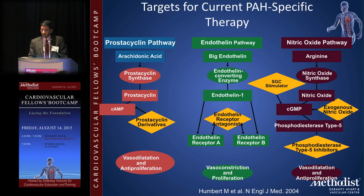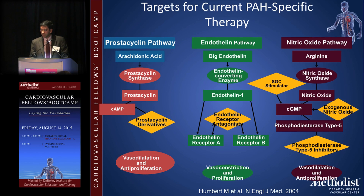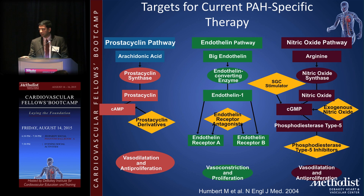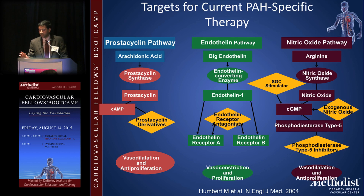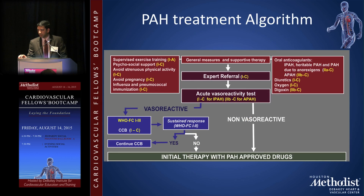The second pathway is the endothelin pathway; the three approved drugs are bosentan, macitentan, and ambrisentan, which block endothelin receptors A and/or B, reducing vasoconstriction and proliferation. The third is the nitric oxide pathway — the most commonly used drugs are sildenafil or tadalafil, PDE5 inhibitors. A recently approved therapy is riociguat, a soluble guanylate cyclase stimulator, and you'll be hearing more about medications in this pathway for heart failure as well.